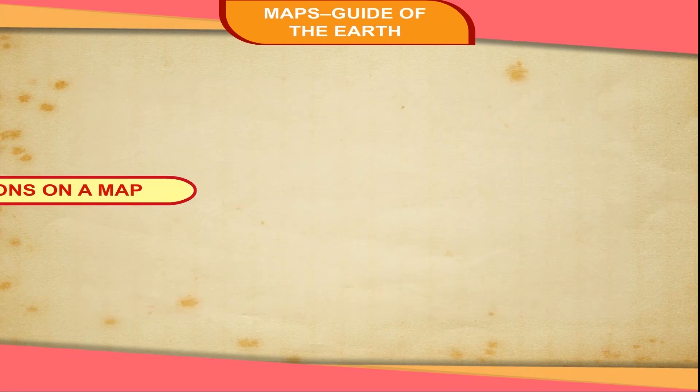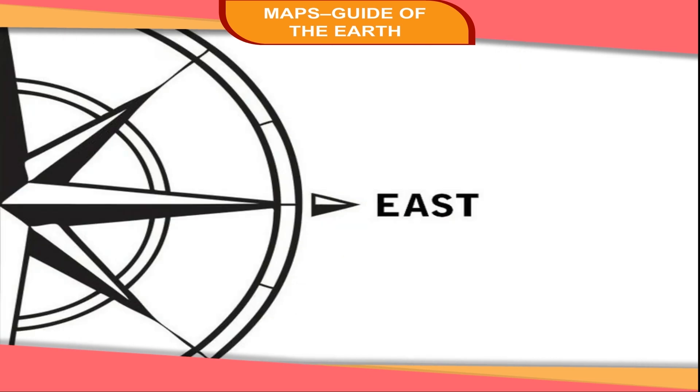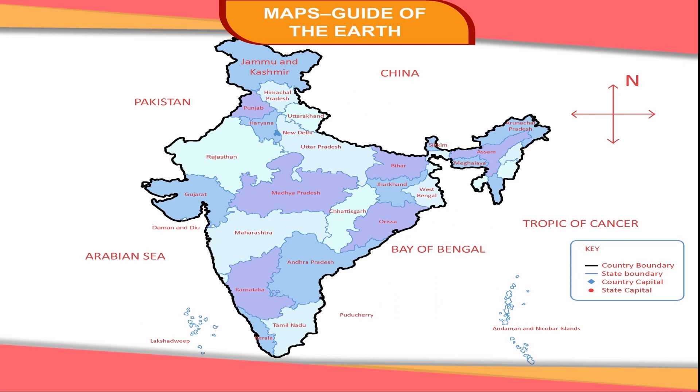There are four main directions on a map. They are north, south, east, and west. It is most essential to know all the directions on a map. Look at the map of India. The top of the map is the north. Opposite the north is the south, which corresponds to the bottom of the map. The east is to your right, corresponding to the right edge of the map. To your left is the west, corresponding to the left edge of the map. These directions are also called cardinal directions.